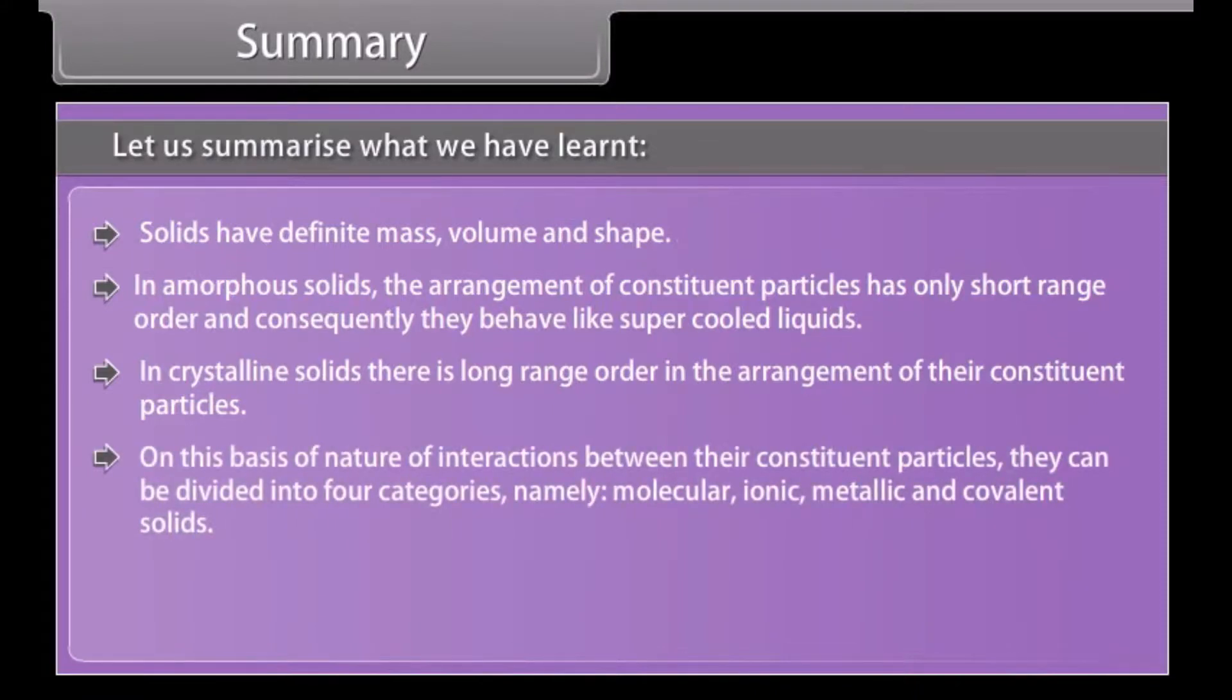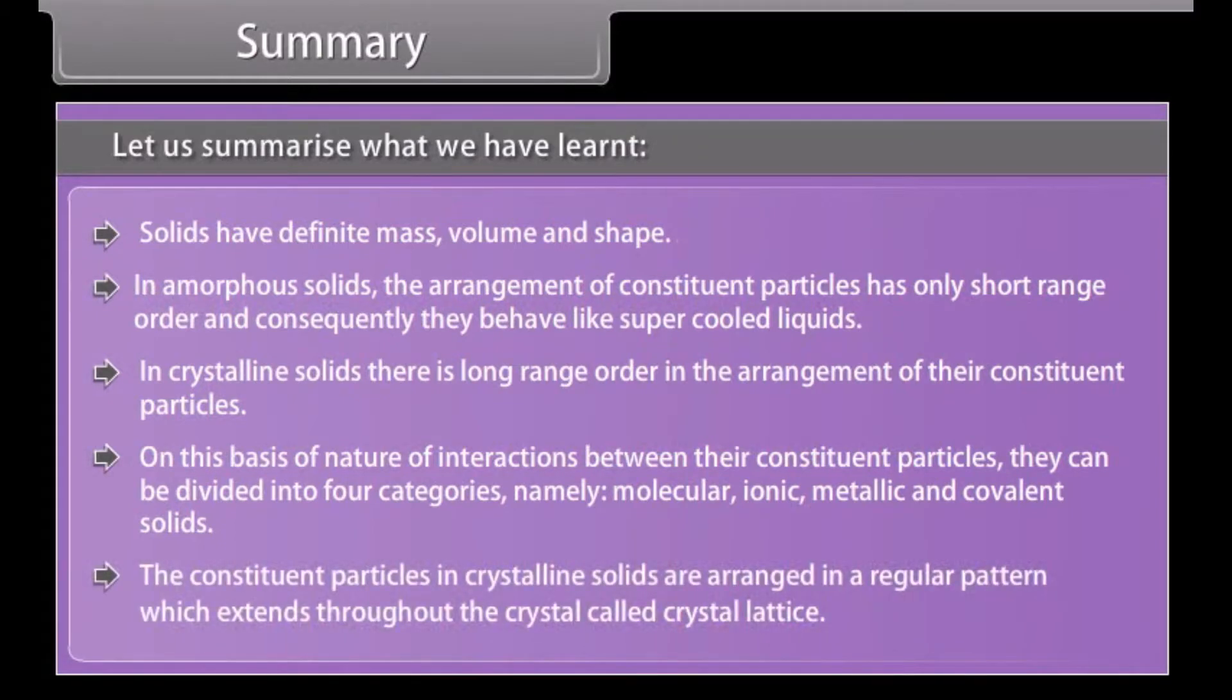On the basis of nature of interactions between their constituent particles, they can be divided into four categories, namely: molecular, ionic, metallic, and covalent solids. The constituent particles in crystalline solids are arranged in a regular pattern which extends throughout the crystal called crystal lattice.